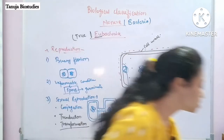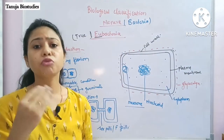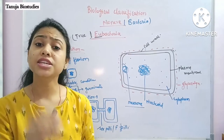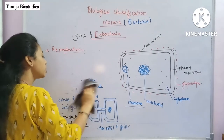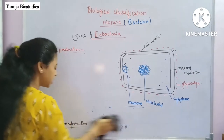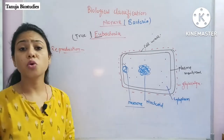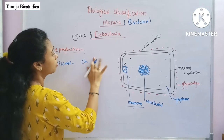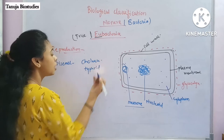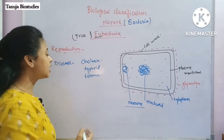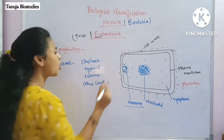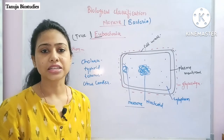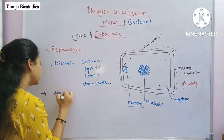Some more basic characteristics: bacteria can be photosynthetic (photo-autotrophs), chemo-autotrophs, decomposers, or parasites. Being parasitic in nature, they can cause diseases such as typhoid, tetanus, citrus canker, and anthrax — because of their pathogenic and parasitic nature.